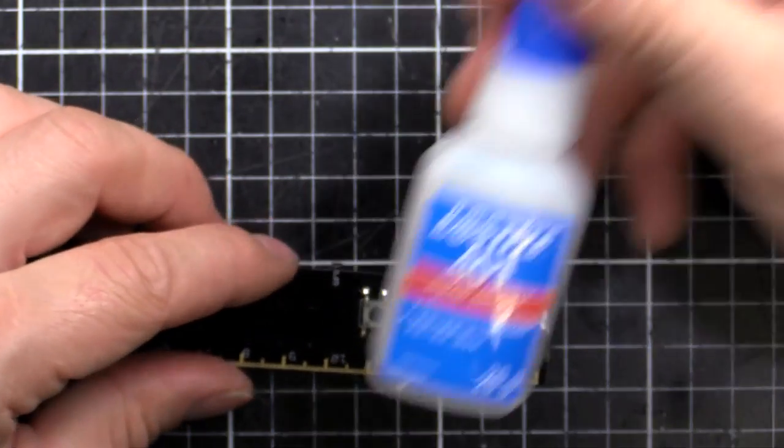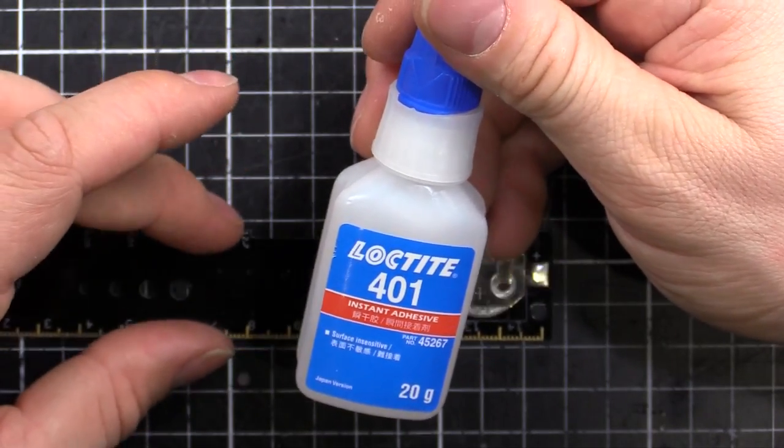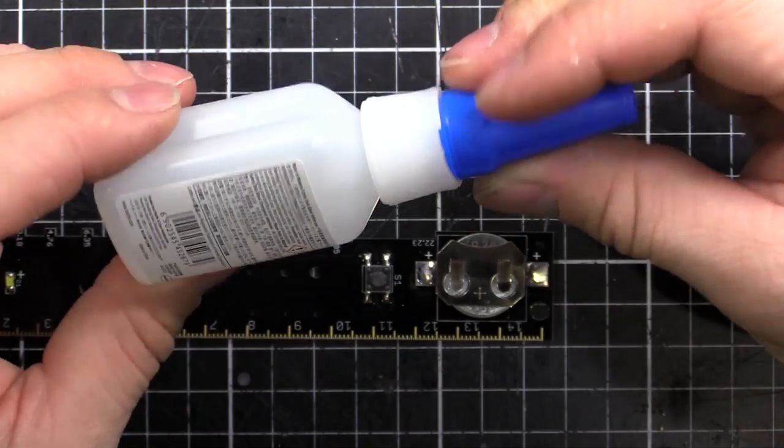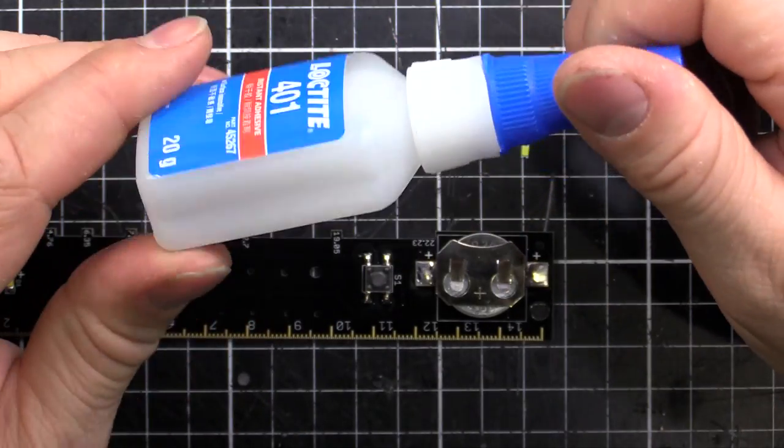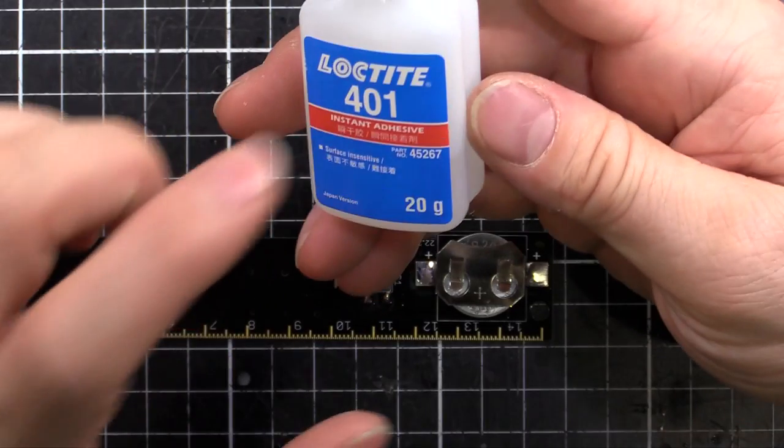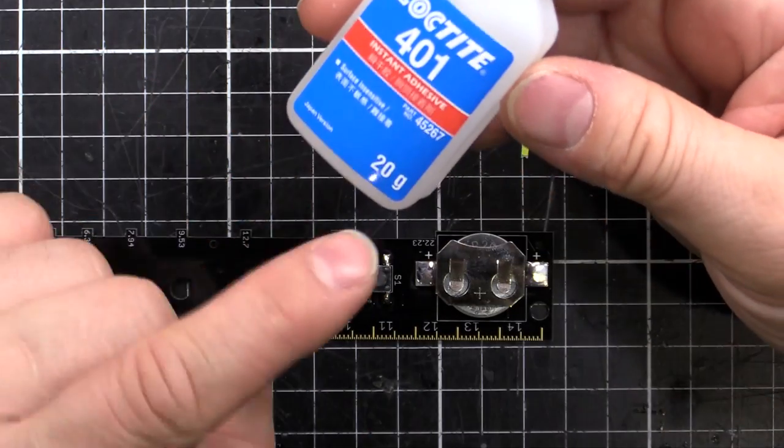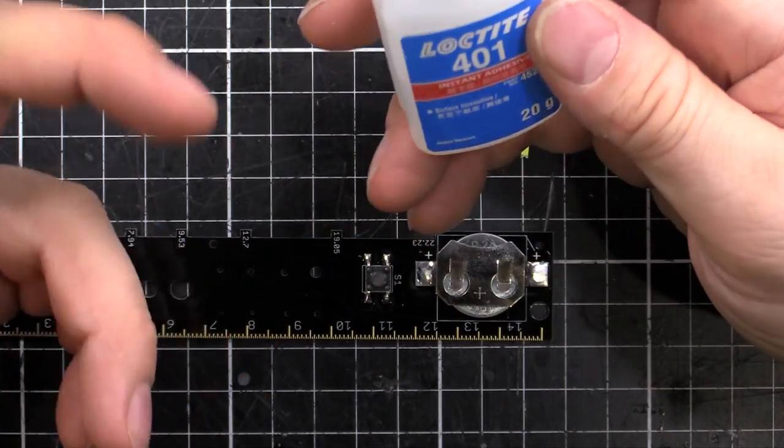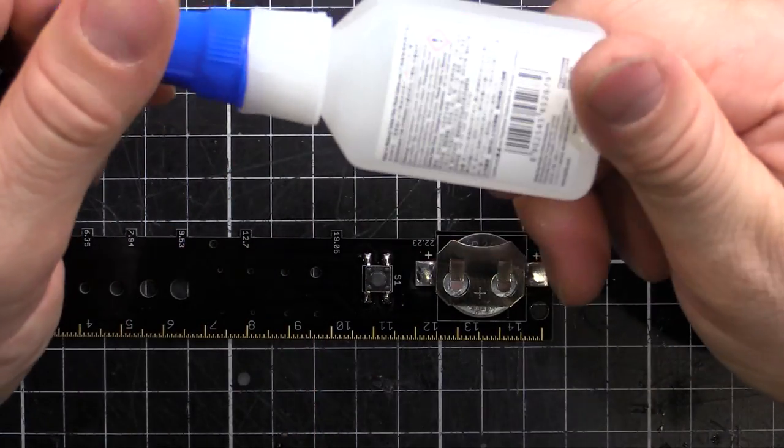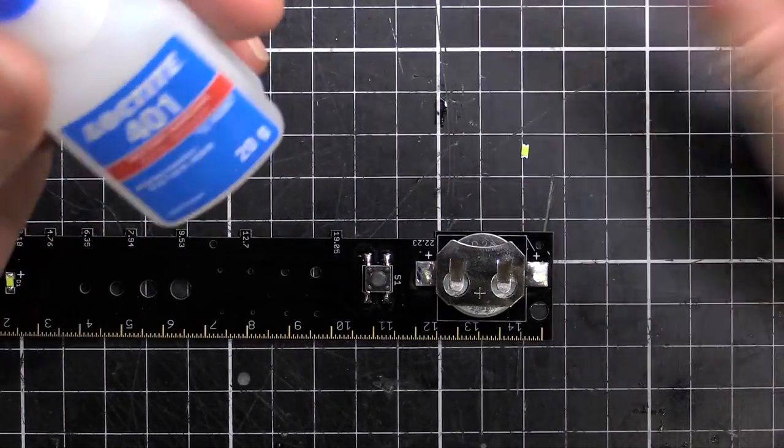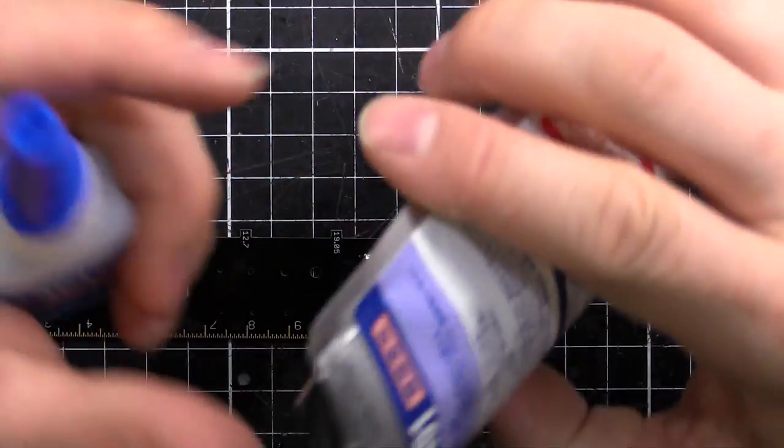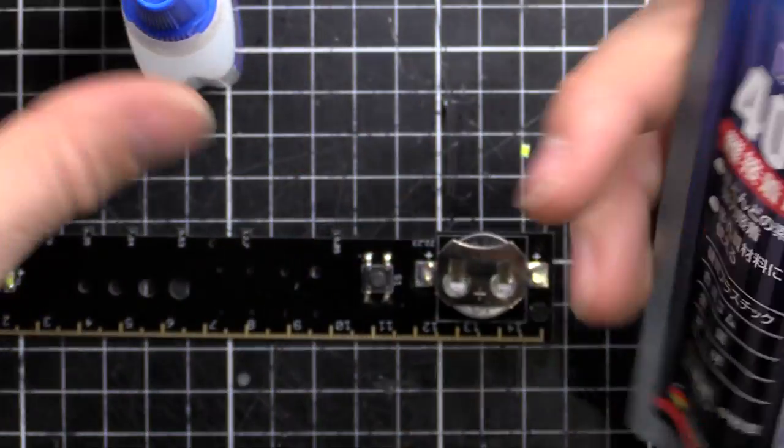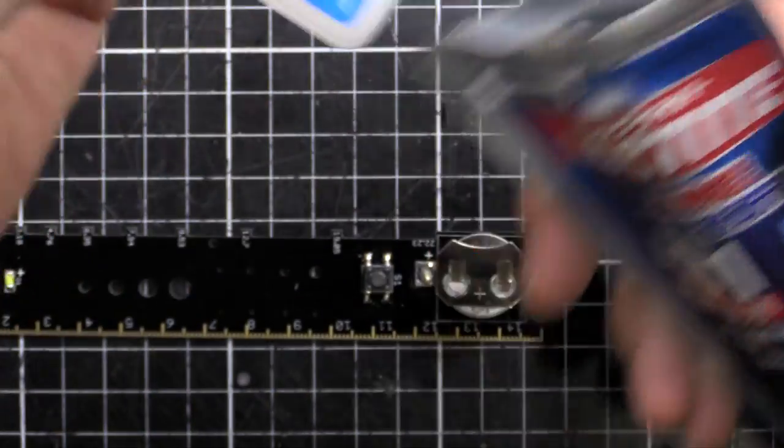So I'm going to use some super glue, Loctite 401. Real good stuff, more expensive than the cheap stuff you get at the dollar store, but it's really really strong. Also it's more expensive because it comes in a 20 gram pack, not the little like 5 gram that you get, you know, the small little tubes. So it's high quality and you get a lot of it. It also comes in like a foil pack with some desiccant in there, and I keep it in there just so it keeps the moisture out, because moisture is what activates this stuff.